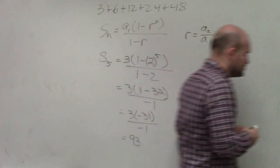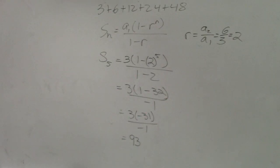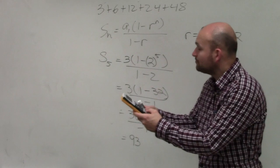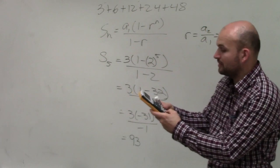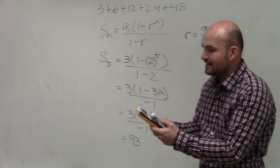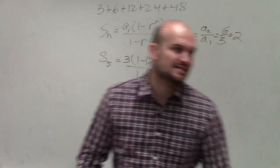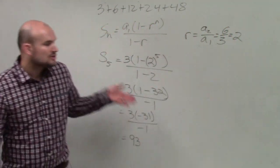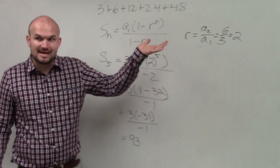Now, if you guys check your answer, simply just go ahead and take a calculator or do it in your head. It doesn't really matter. But 3 plus 6 plus 12 plus 24 plus 48, you guys can see, is a positive 93.